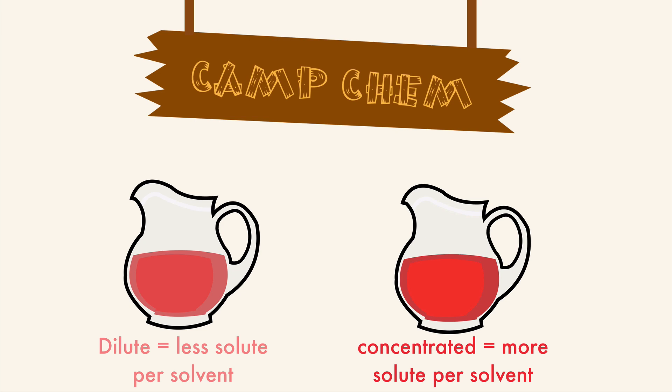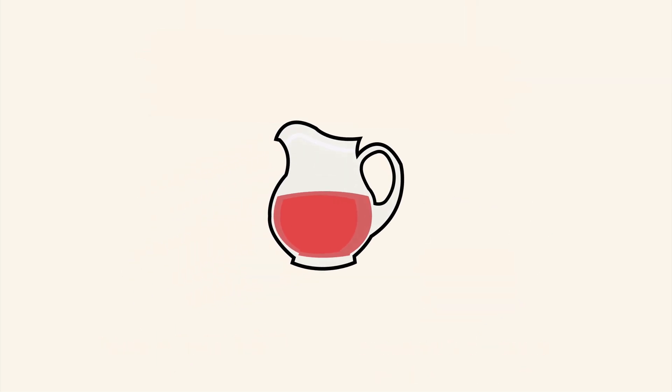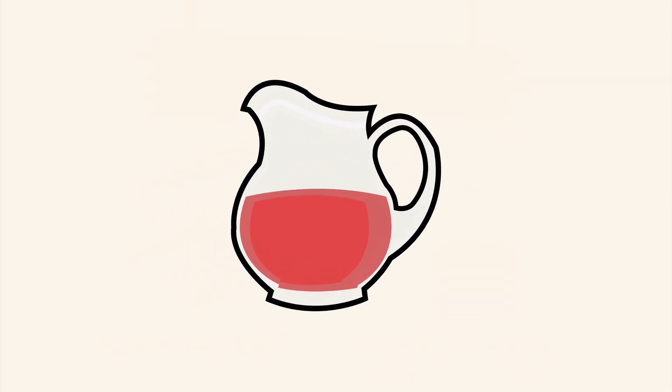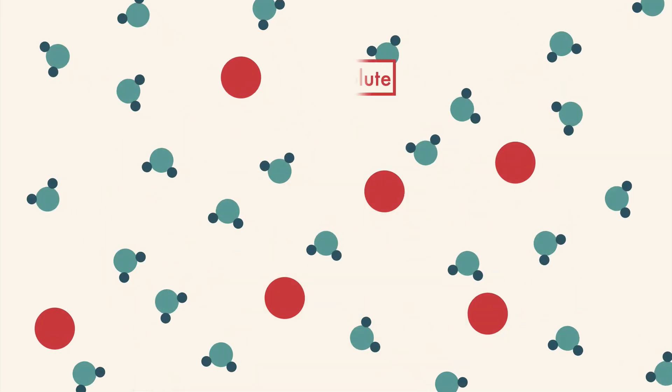Solutions with relatively more solvent and less solute are called dilute, while solutions with more solute and less solvent are concentrated. In this diluted Kool-Aid, there aren't very many particles of Kool-Aid — the solute — relative to water, the solvent.